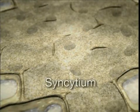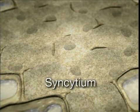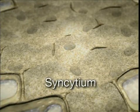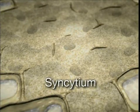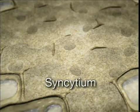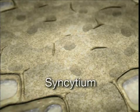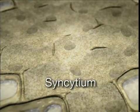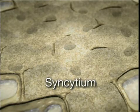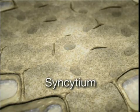This structure is called a syncytium — a system of feeding cells that provides large amounts of all nutrients necessary for the nematode's further development.